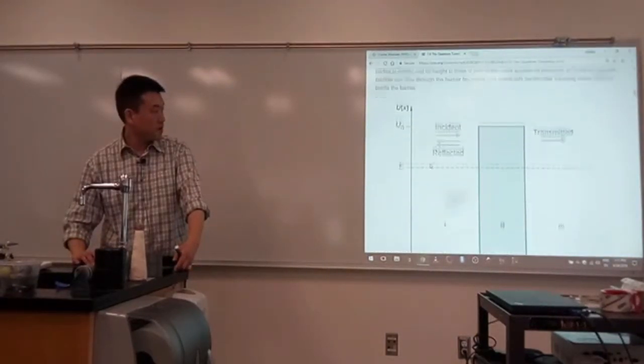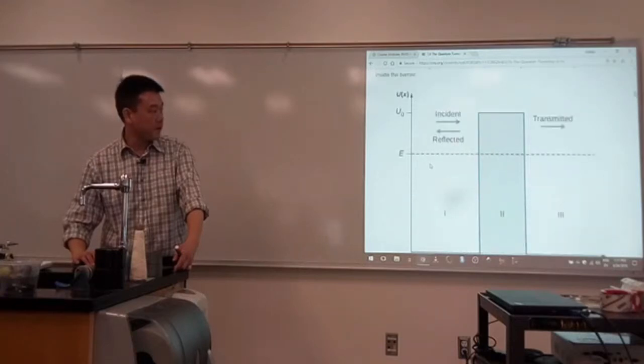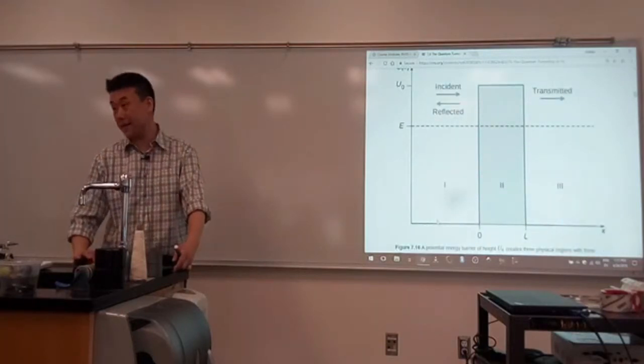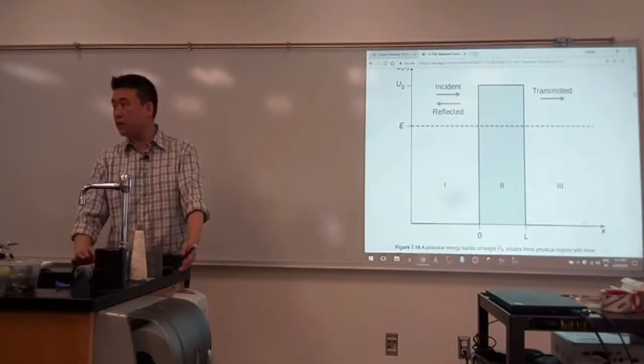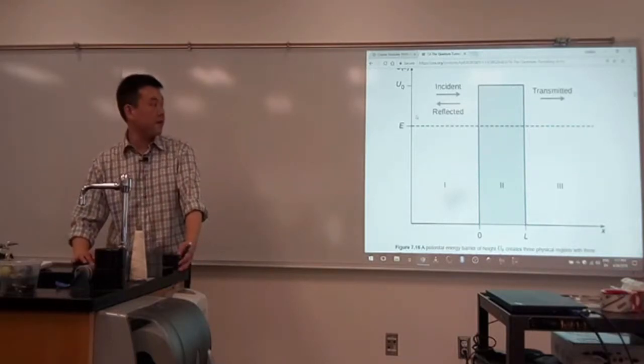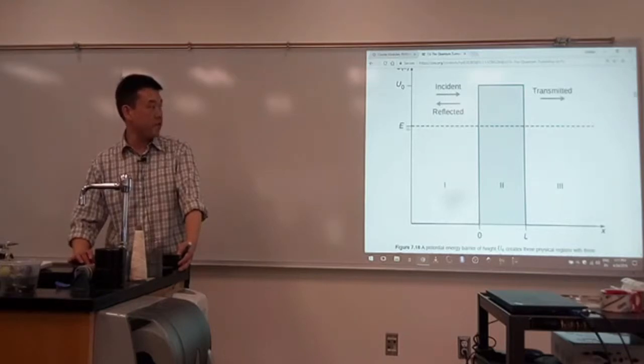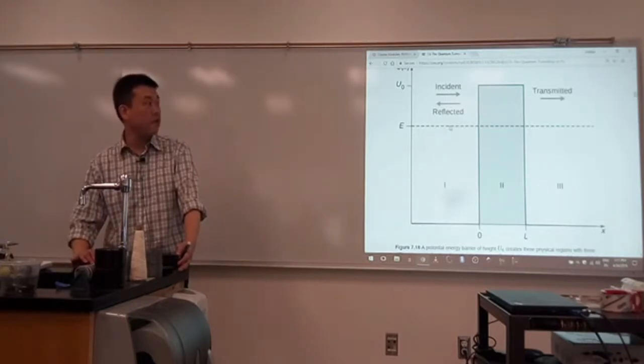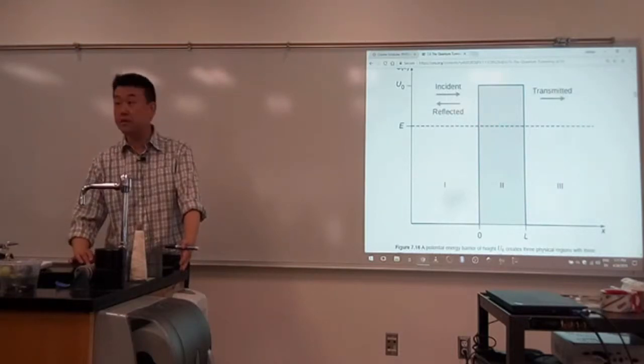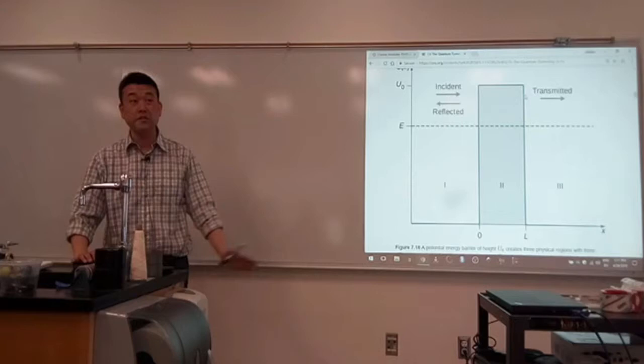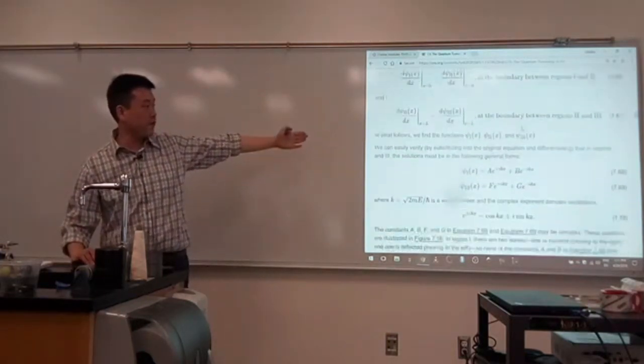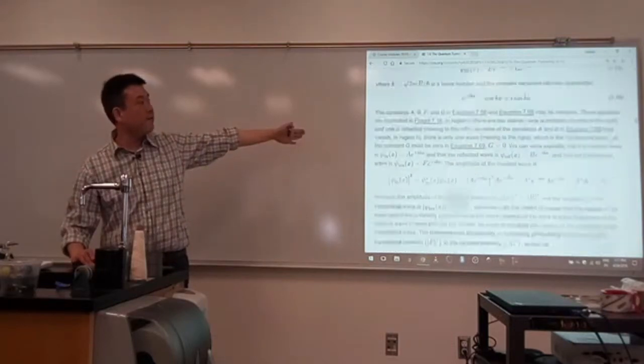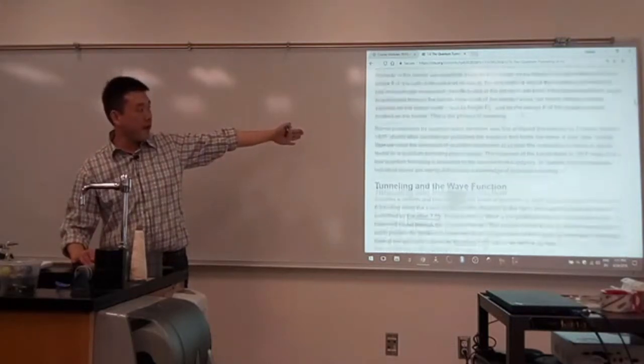So here they are working out the case for where you have two steps actually. A step up and then a step down. And then when they talk about tunneling, it's the idea that particle here, which has some energy, which is not high enough to classically go over this barrier, actually ends up getting transmitted on this side. You saw this on the simulation lab. And in this section, they actually go through the calculation and do all that. So, that's where we are heading to.